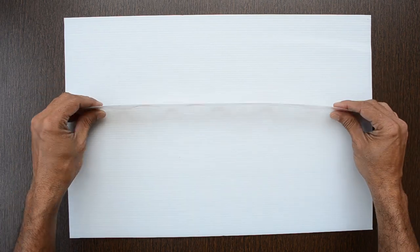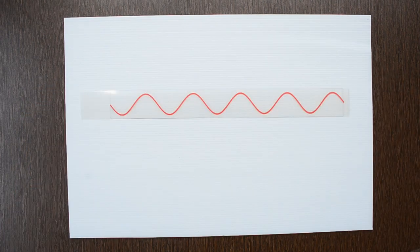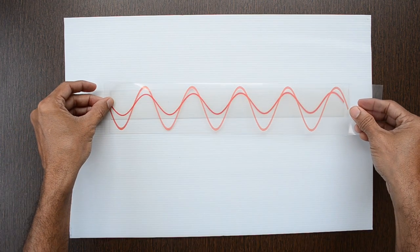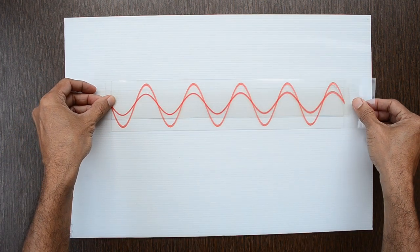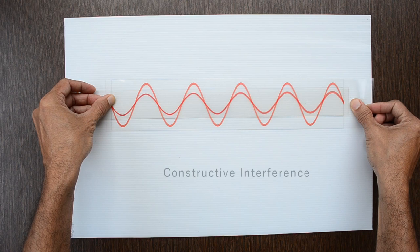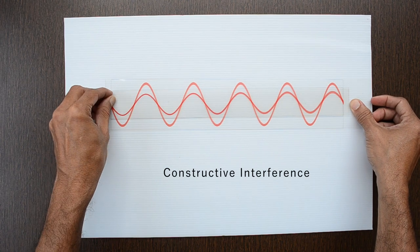New wave thus formed is identical to the original one but larger in amplitude when both waves are in phase. This is also known as constructive interference.